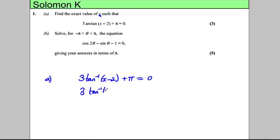So 3 inverse tan of X subtract 2 is equal to negative pi. Let's divide both sides by 3. Tan inverse of X subtract 2 is going to be negative pi by 3.